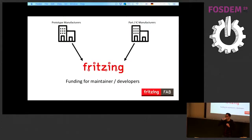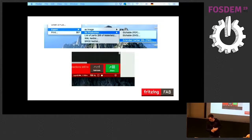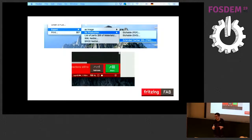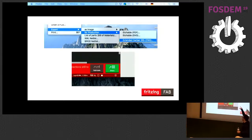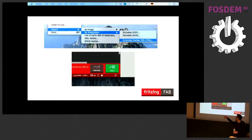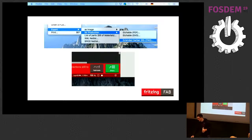This slide shows how the integration into the Fab looks. The user always has the independence to decide where to manufacture the PCB. There's a Gerber export, but if you hit the 'Fabricate' button you're directly redirected to the Fritzing Fab.